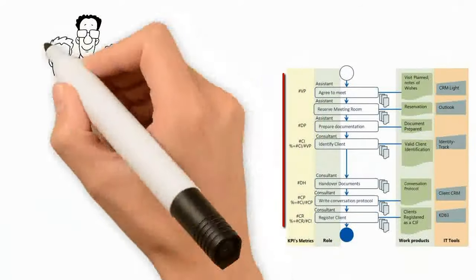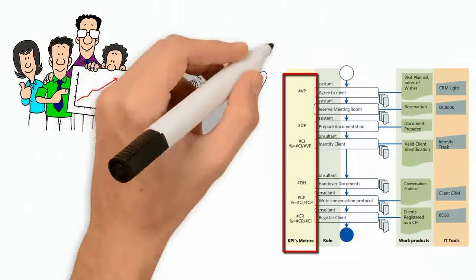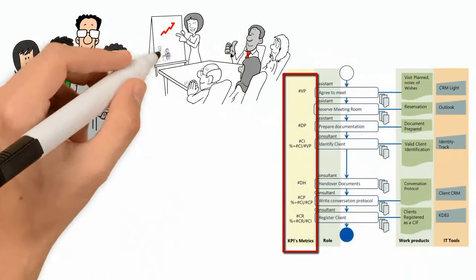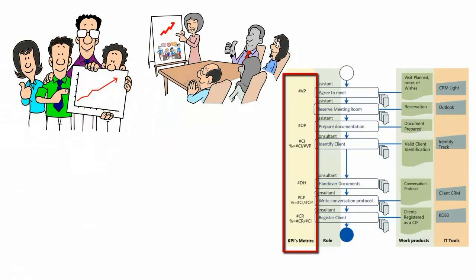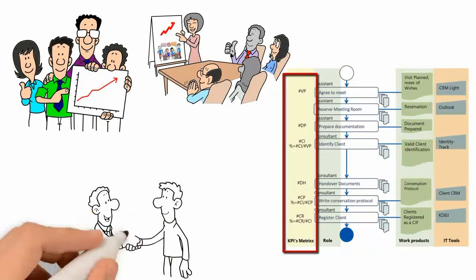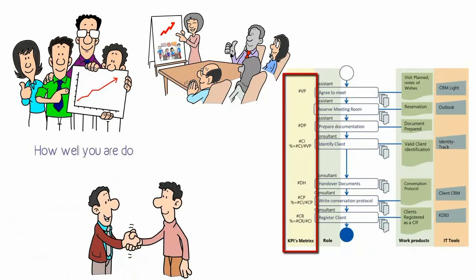To improve your work, you need metrics. Start with simple metrics and count the work products, such as the number of visits planned and clients identified, then put them into relation. With that, you find out your success rate, how well you're doing in your processes, where there are gaps, and where you can improve.